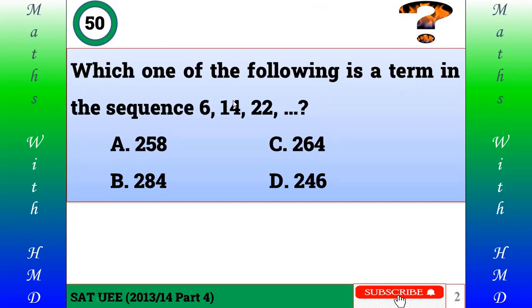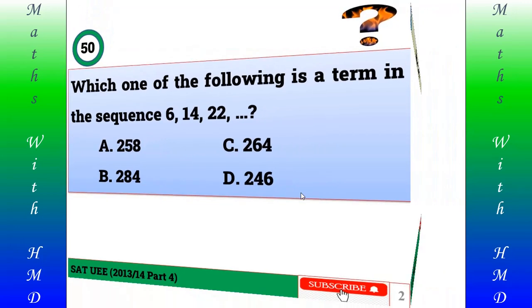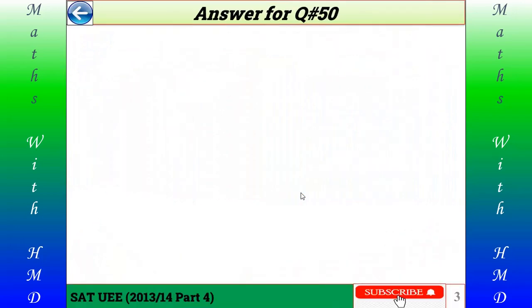Here is question number 50: which one of the following is a term in the sequence 6, 14, 22, and so on? A) 258, B) 284, C) 264, D) 246. Before watching the answer, please try by yourself and then check your answer with my answer.